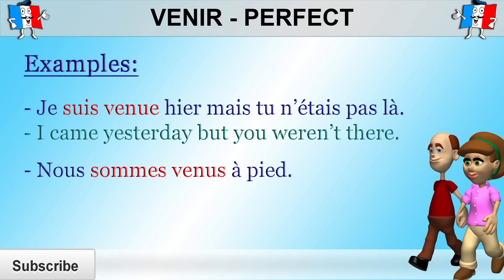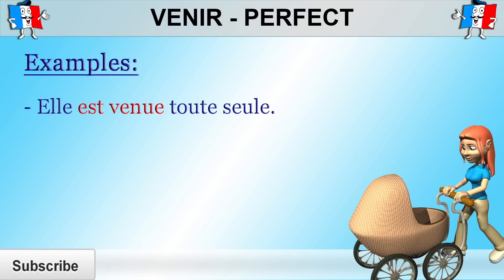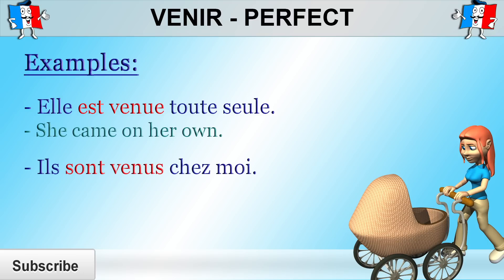Nous sommes venus à pied. We came on foot. So the way venu is spelt here means that nous either refers to a group of males or males and females, but it cannot just be females because we haven't added an e. Elle est venue toute seule. She came on her own. Ils sont venus chez moi. They came to mine.